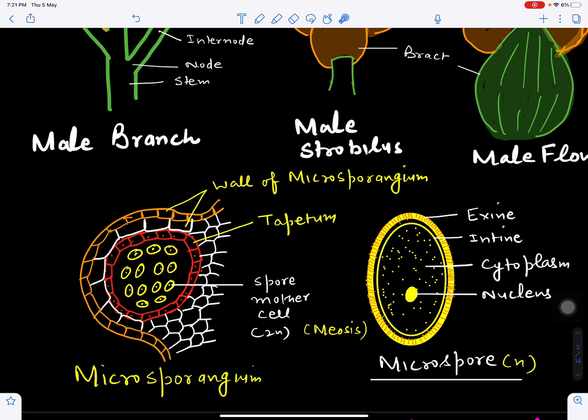The spore mother cell undergoes meiotic cell division to form four microspores—three at the front and one at the base. After meiosis, all the spores are haploid in genetic constitution.